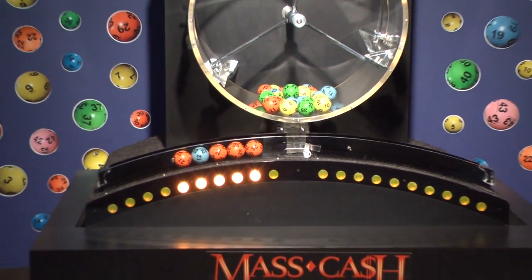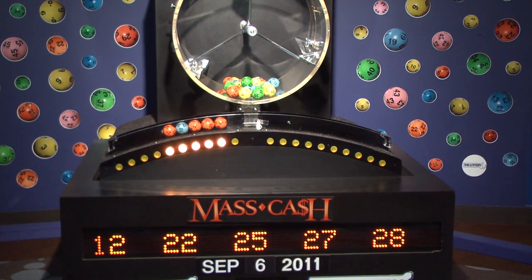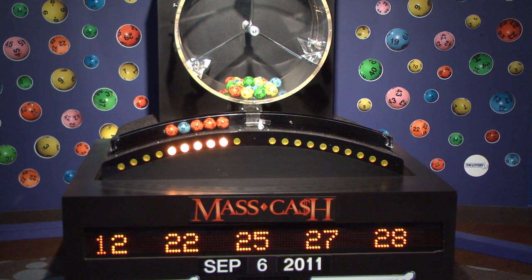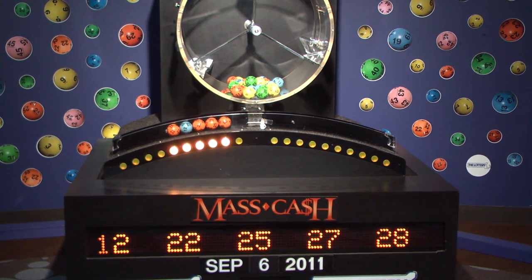Once again, the winning MassCash numbers for Tuesday, September 6, 2011 are 12, 22, 25, 27, and 28. Remember to log on to MassLottery.com to watch all of the Mass State Lottery's drawings.